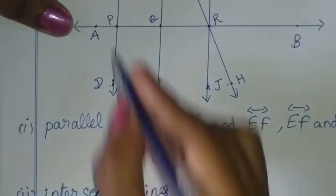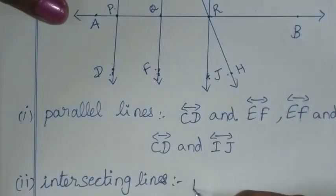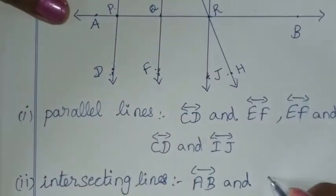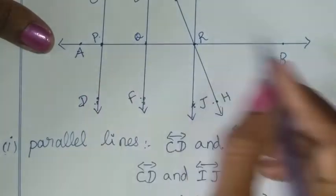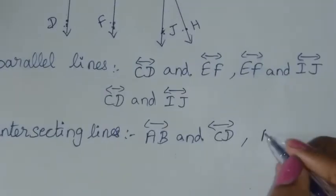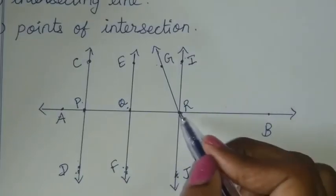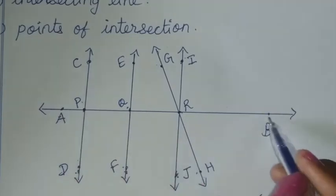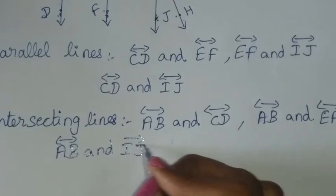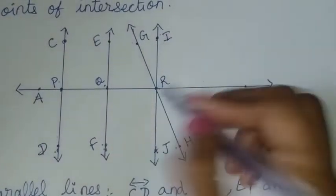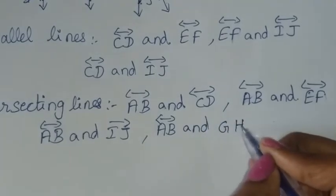First, we have to look at this point. In this point, there are two intersecting points. AB and CD intersect in this area. AB and EF intersect in this area. So AB and GH intersect in this area.